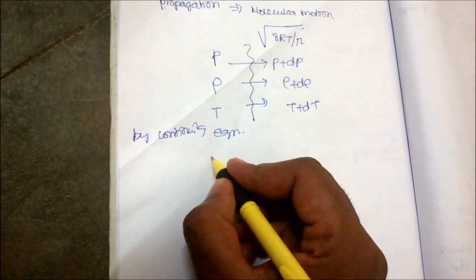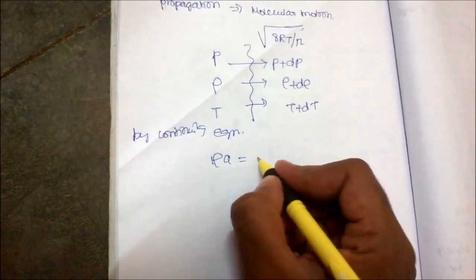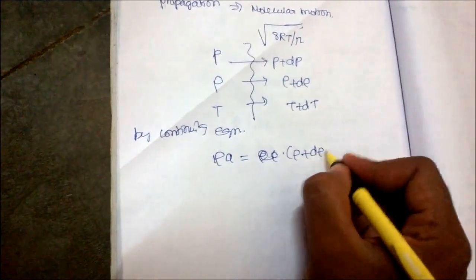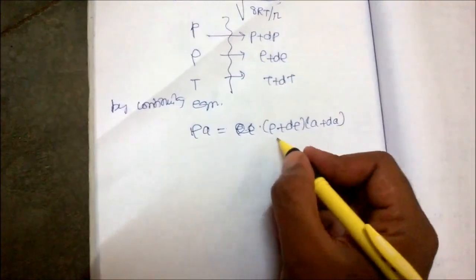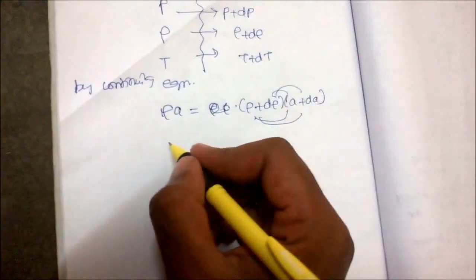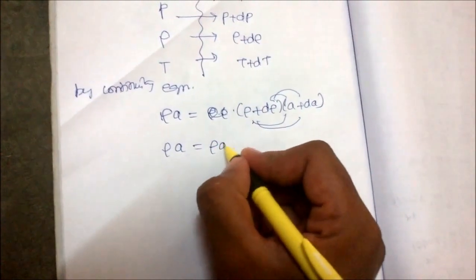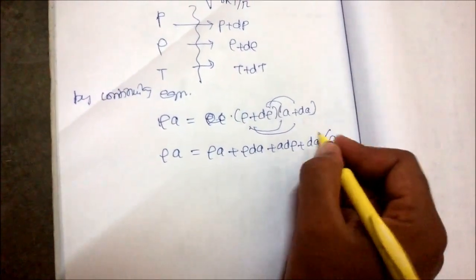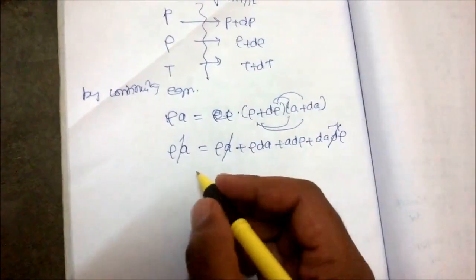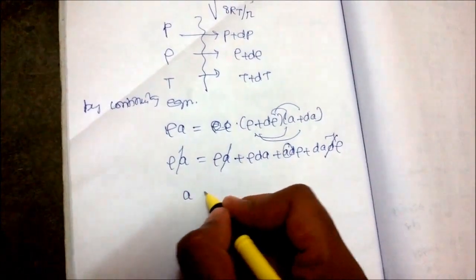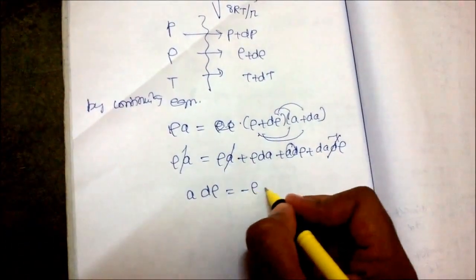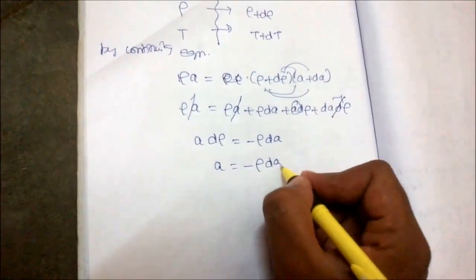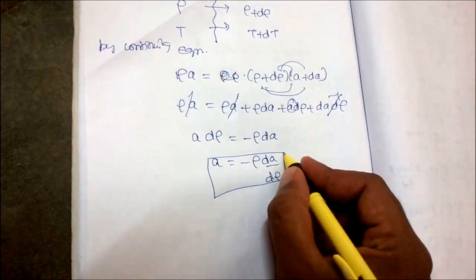By the continuity equation, ρA = (ρ+dρ)(A+dA). Expanding this term: ρA = ρA + ρ·dA + A·dρ + dA·dρ. Canceling the higher-order term dA·dρ, and simplifying, we get A·dρ = −ρ·dA, so A = −ρ·dA/dρ. Keep this term.